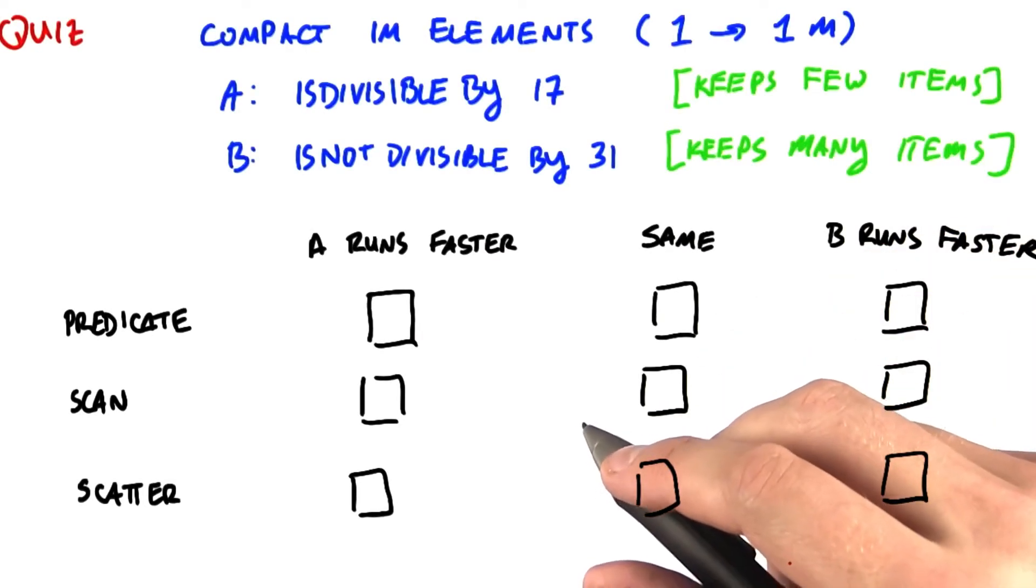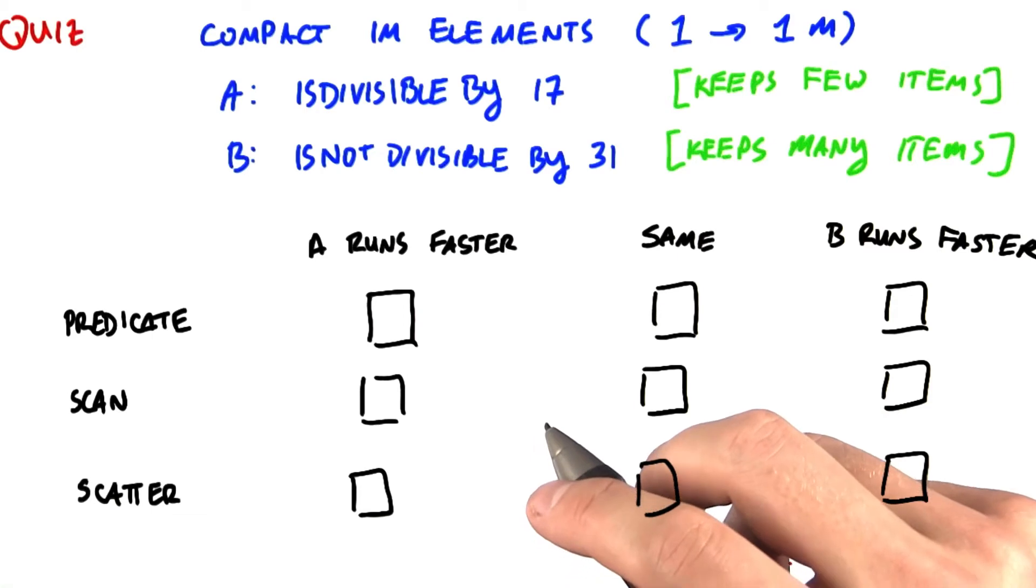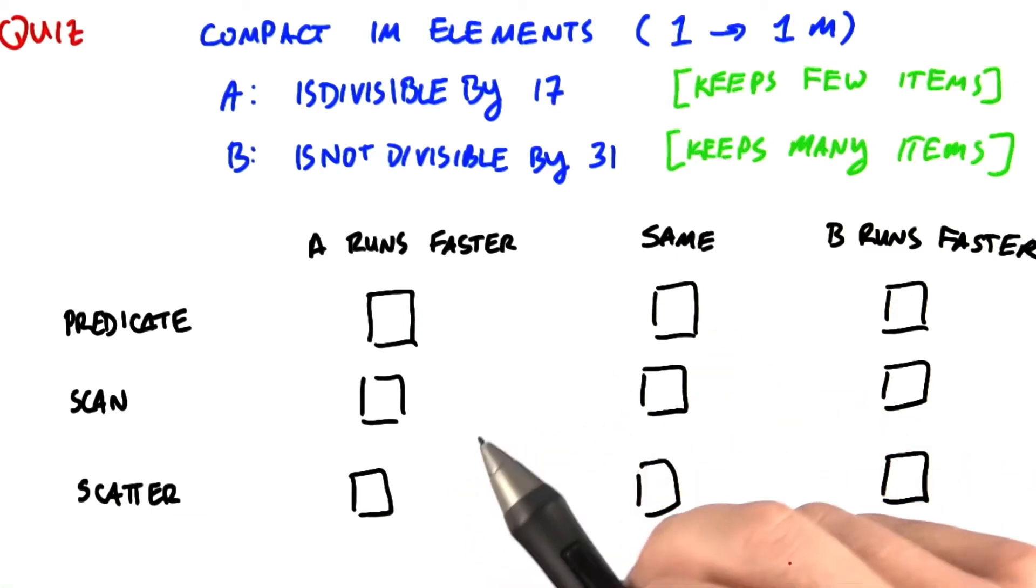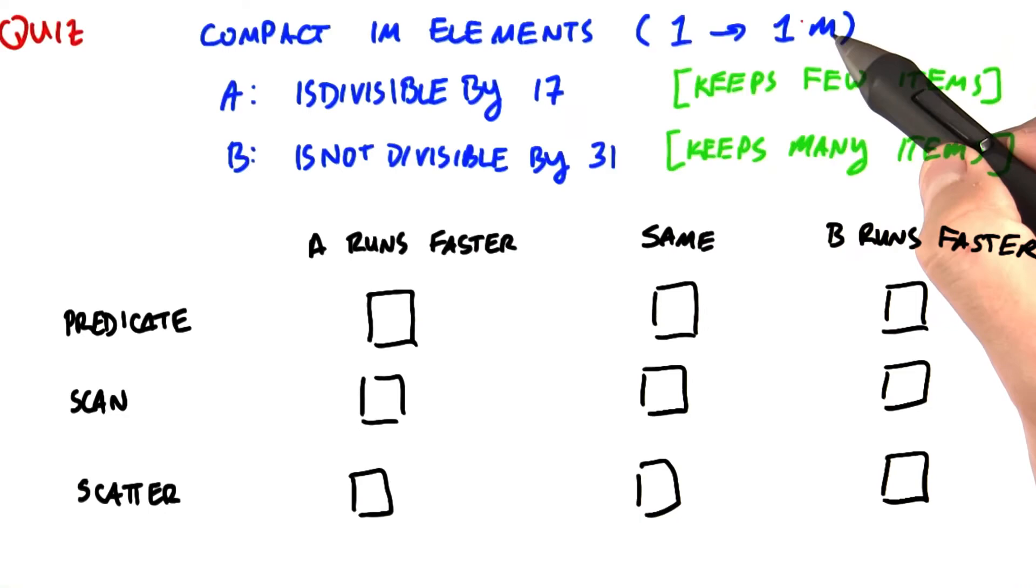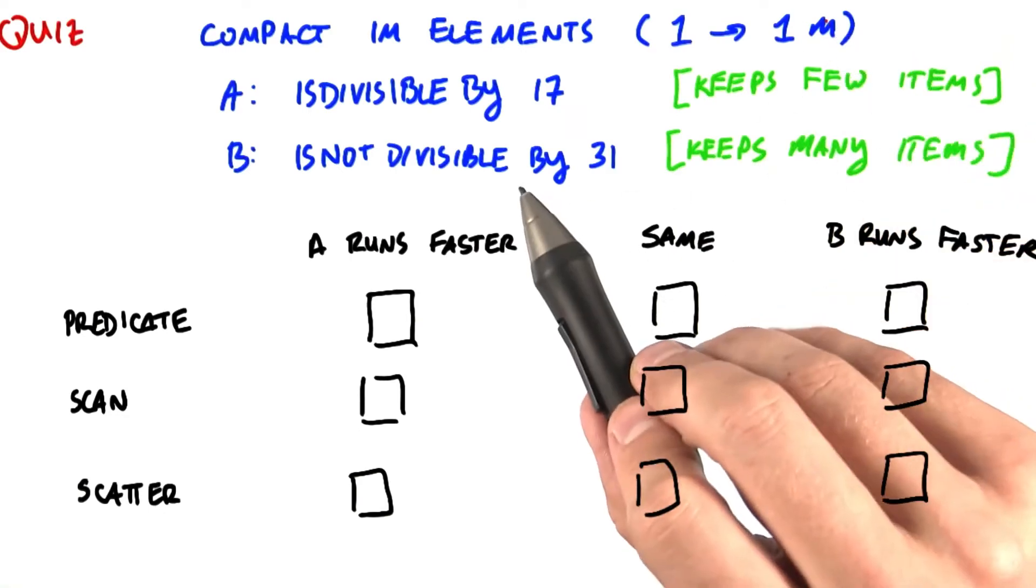Let's try a little quiz to get some intuition about the runtime of compact. We're going to compare two compact operations, and both are going to compact the list of numbers from 1 to 1 million.